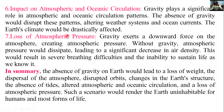The Earth's climate would be drastically affected. Number seven: loss of atmospheric pressure. Gravity exerts a downward force on the atmosphere, creating atmospheric pressure. Without gravity, atmospheric pressure would dissipate, leading to a significant decrease in air density. This would result in severe breathing difficulties and the inability to sustain life as we know it.